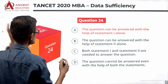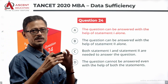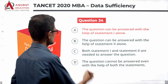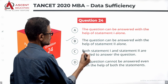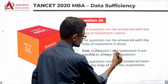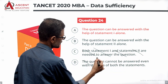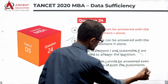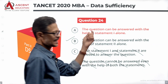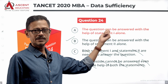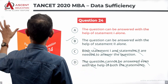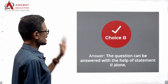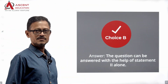Statement two alone gives us a unique answer, which means statement two alone is sufficient. The answer option is B — statement two alone is sufficient to answer this question.